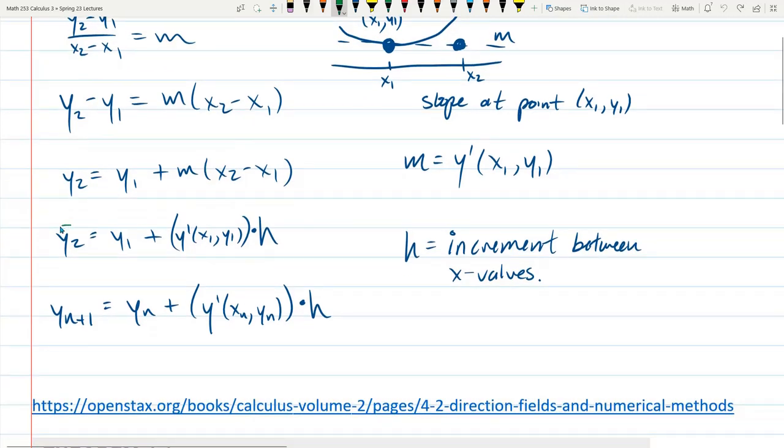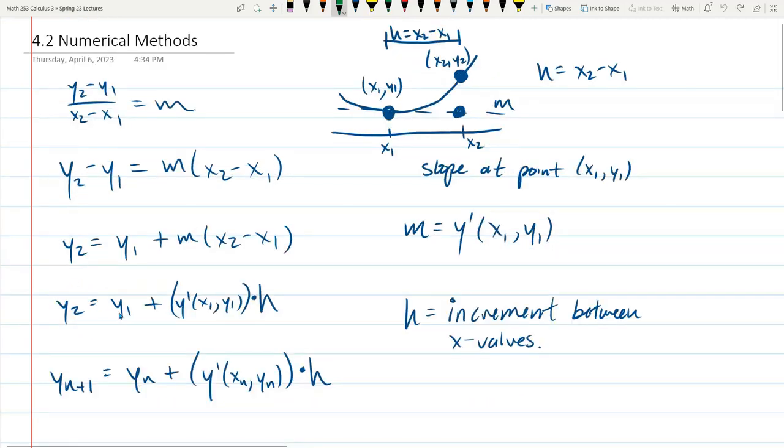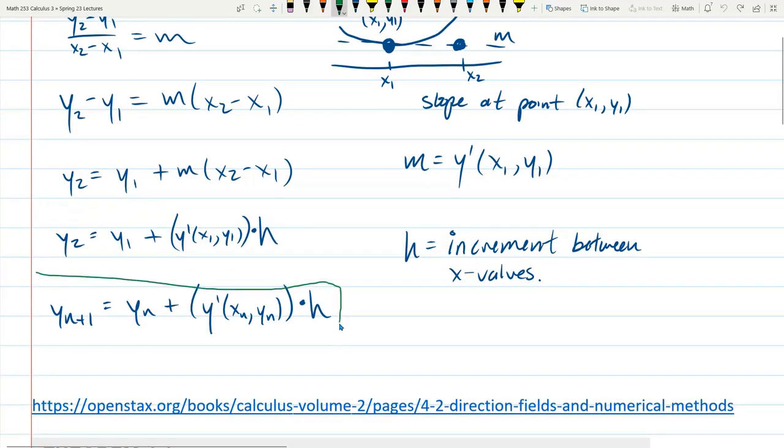So that'll give us y2, and we can do this again and again. What I have written here is if you know the previous x, y pair, we'll call it xn, yn, and if you know the slope, which is y prime of that, all you have to do is multiply by h. That is how much your y is going to change, and you just have to take your previous y value and change it by that much.